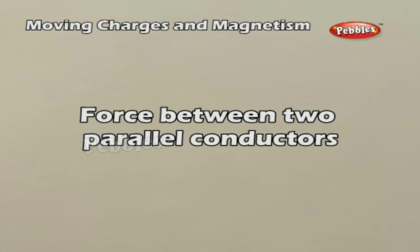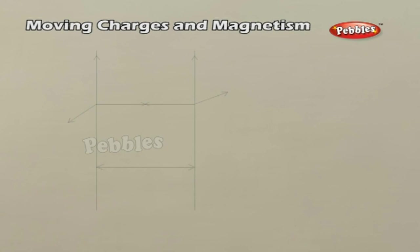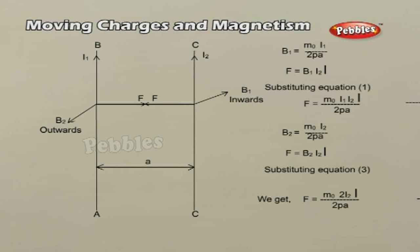Force between two parallel conductors. AB and CD are two straight, very long parallel conductors placed in air at a distance A, carrying currents I₁ and I₂ respectively. The magnetic induction due to current I₁ in AB at a distance is shown; this magnetic field acts perpendicular to the plane of the paper and inwards. The conductor CD with current I₂ is situated in this magnetic field, and the force on a segment of length L of CD due to magnetic field B₁ is shown. By Fleming's left-hand rule, this force faces towards the left.